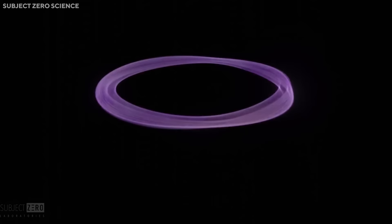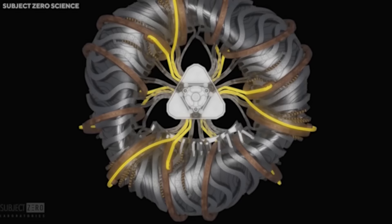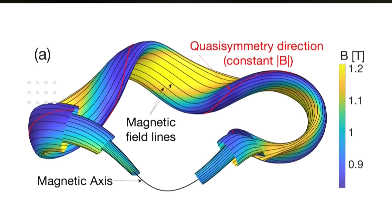The stellarator has seen a resurgence of interest in the last few decades, thanks to the advances in computational power, engineering techniques, and plasma physics. One of the key breakthroughs was the discovery of quasi-symmetry, a property that allows the stellarator to reduce the transport losses and achieve high plasma confinement.